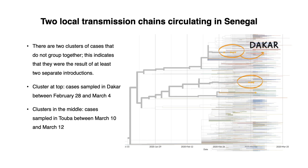The cluster shown towards the top of the tree consists of cases sampled in Dakar between February 28th and March 4th. In the middle of the tree is a cluster of cases sampled in Touba between March 10th and March 12th. This suggests that HCOV-19 may have been circulating in Touba for around three weeks.